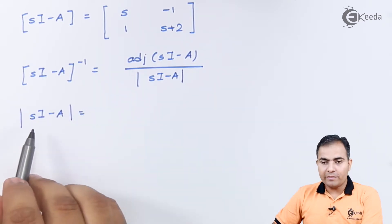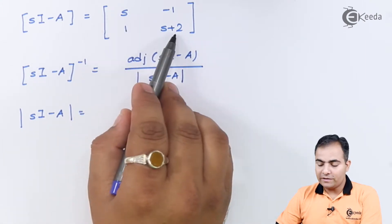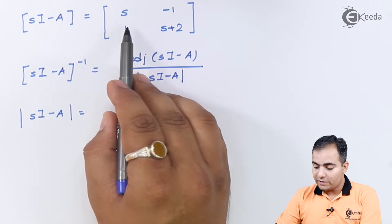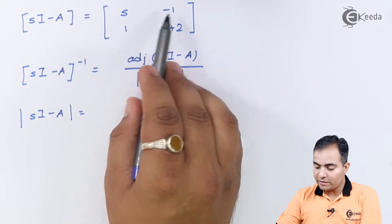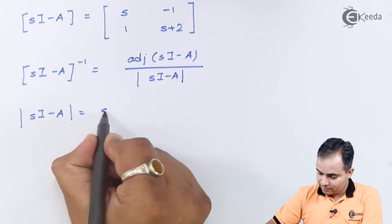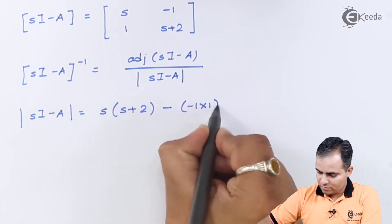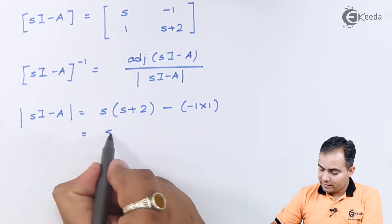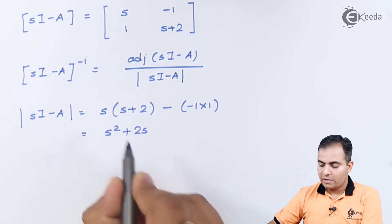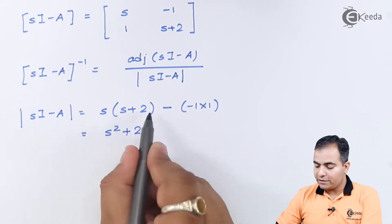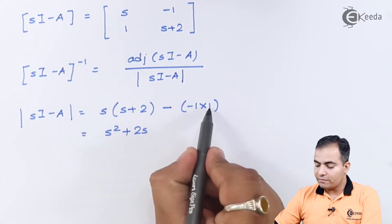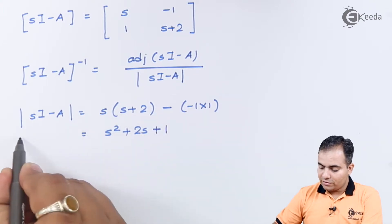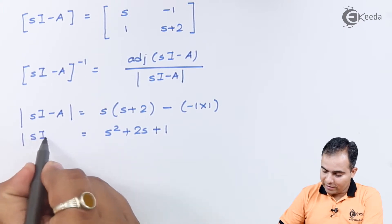Computing the determinant: s × (s+2) = s² + 2s, and then subtract (-1), which gives +1. So the determinant of (sI - A) is s² + 2s + 1. Now we move on to finding the adjoint of (sI - A).